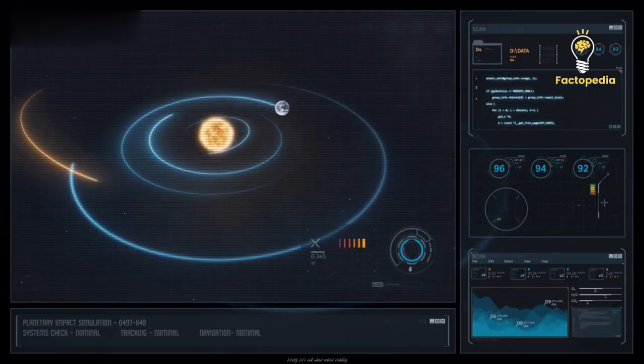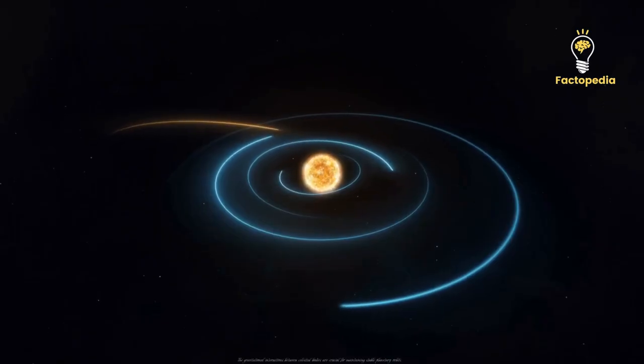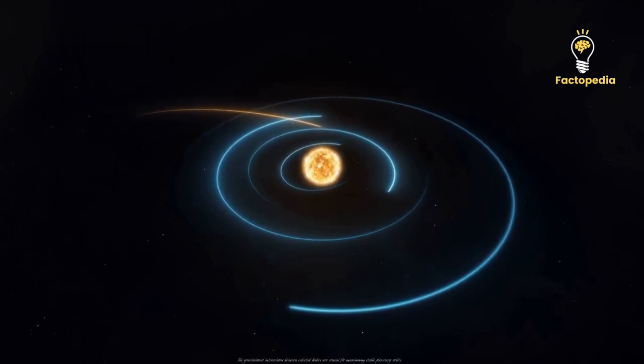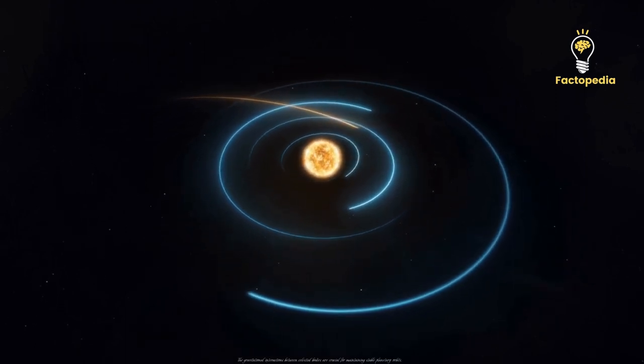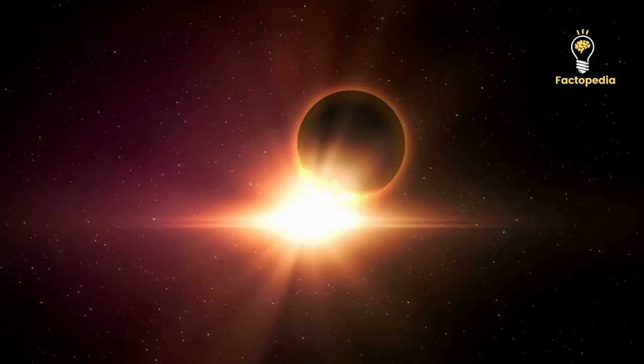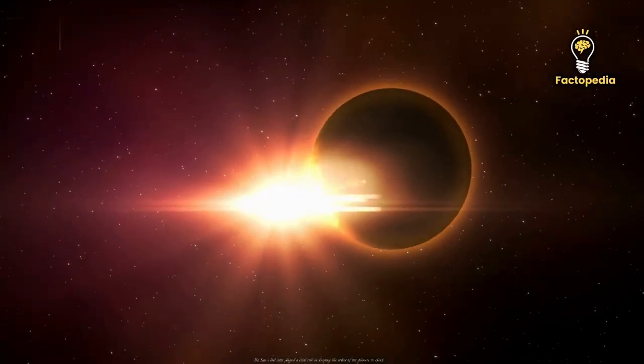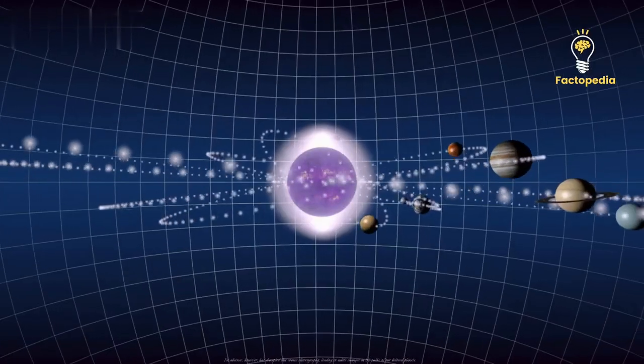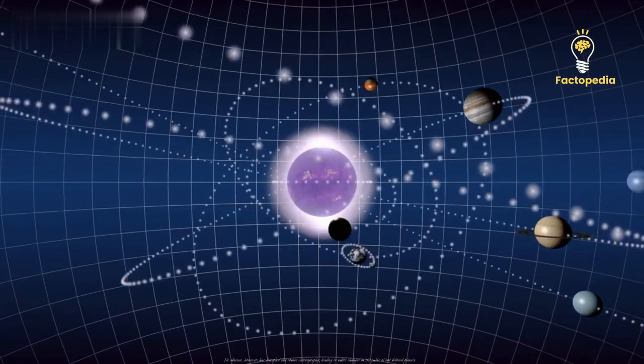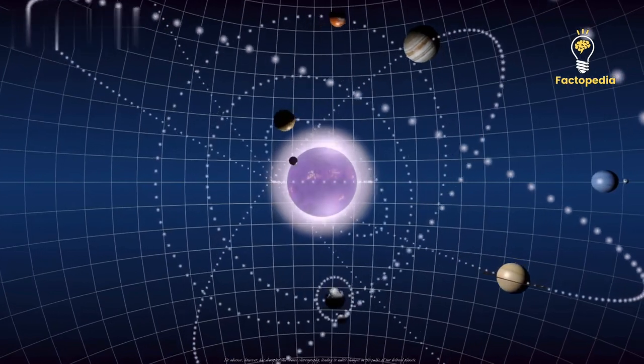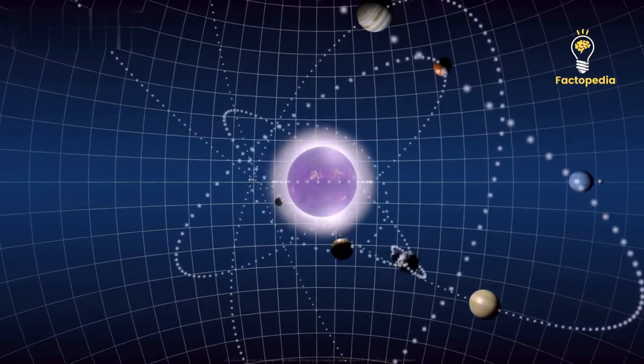Firstly, let's talk about orbital stability. The gravitational interactions between celestial bodies are crucial for maintaining stable planetary orbits. The sun's lost twin played a vital role in keeping the orbits of our planets in check. Its absence, however, has disrupted this cosmic choreography, leading to subtle changes in the paths of our beloved planets.